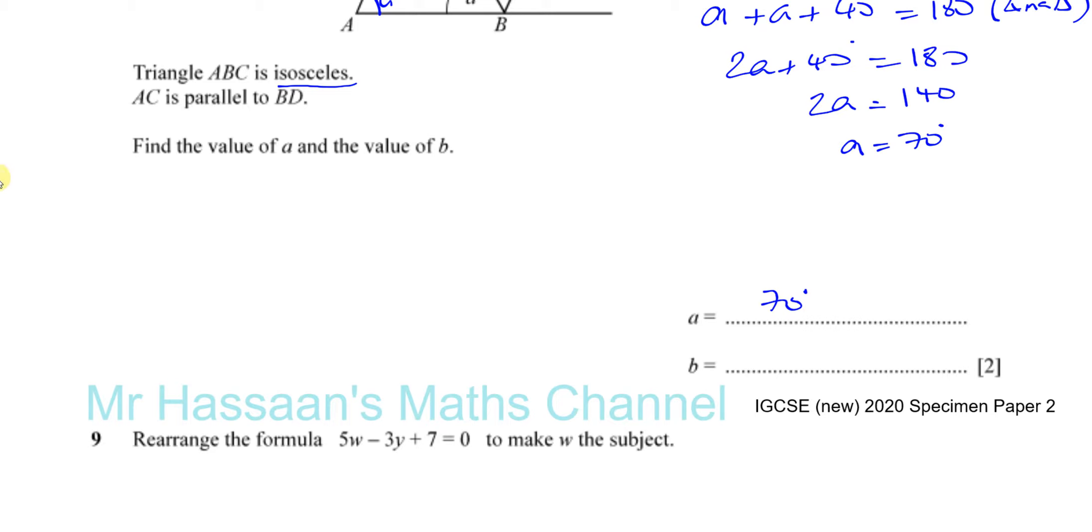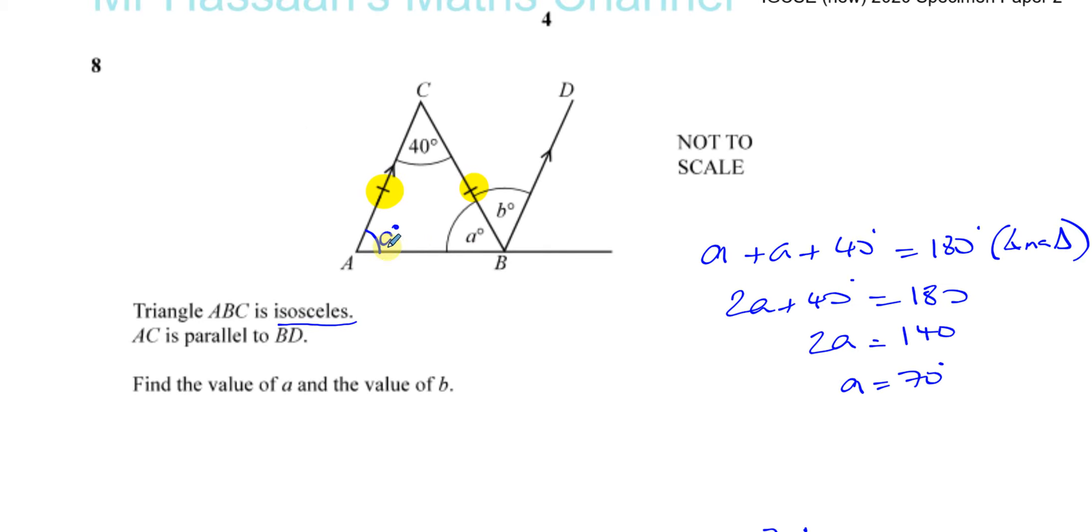That's part A done. You can check: 70 plus 70 is 140, plus 40 is 180. They add up to 180 degrees. Secondly, we need to find angle B. Now for angle B, there's numerous ways of doing it. This time I'm going to focus on the fact that they've told us that these two sides are parallel. AC and BD are parallel.